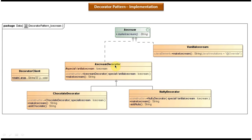The IceCreamDecorator is an abstract class, and it also implements the IceCream interface and provides an implementation of the MakeIceCream method. It has an IceCreamDecorator constructor — in the constructor you have to pass the ice cream which you want to decorate. This abstract class is extended by two concrete classes: ChocolateDecorator and NuttyDecorator. Both of these classes override the MakeIceCream method.